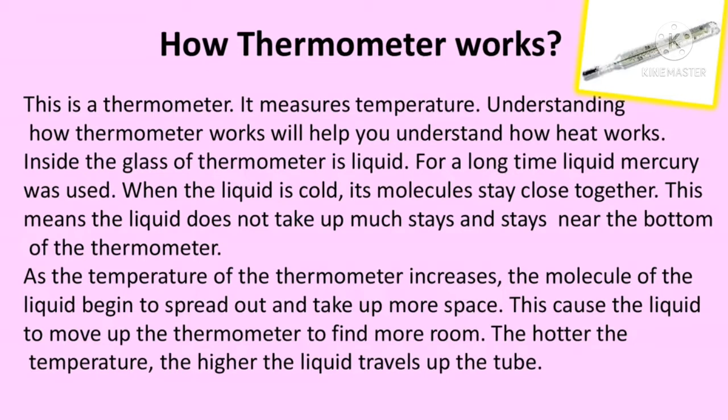As the molecules of the liquid begin to spread out, they take up more space, causing the liquid to move up the thermometer. The hotter the temperature, the higher the liquid travels up the tube. In a spring thermometer, a coiled piece of metal is attached to a pointer. As the air heats, the pointer moves higher; as the air cools, the metal contracts and the pointer moves lower. These types of thermometers are less accurate than bulb or digital thermometers. A regular outside bulb thermometer shows a thin red or silver line that grows longer when hotter and goes down in cold weather.